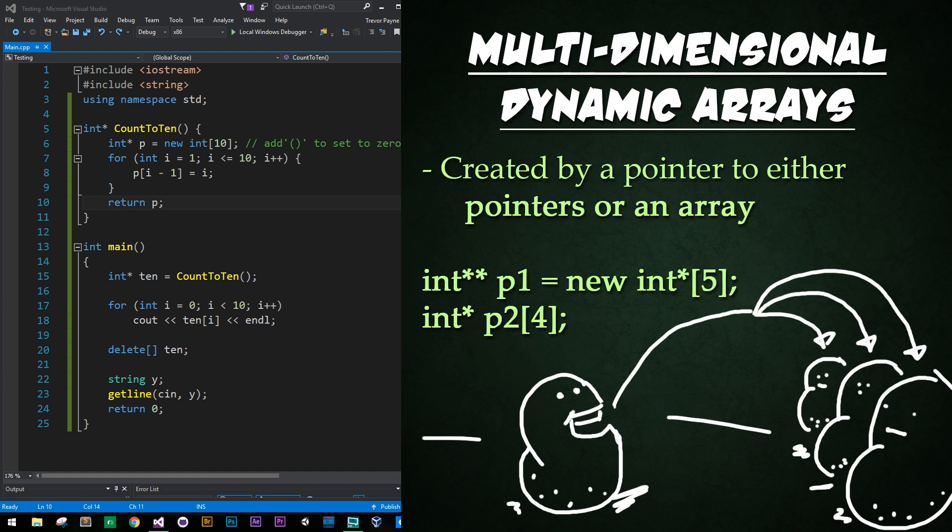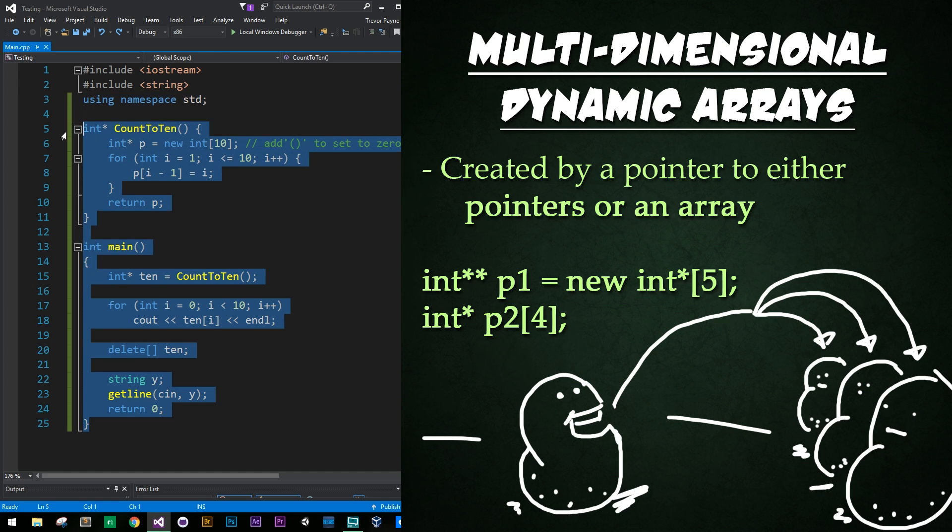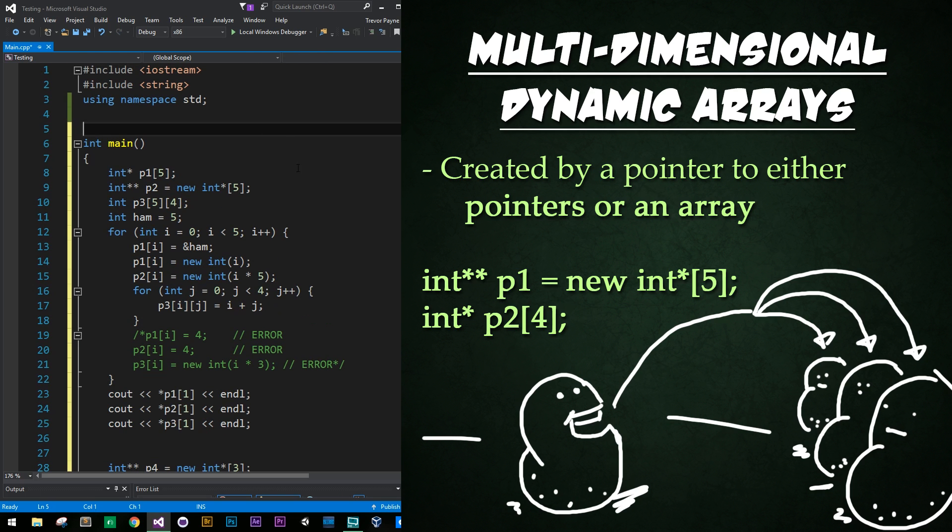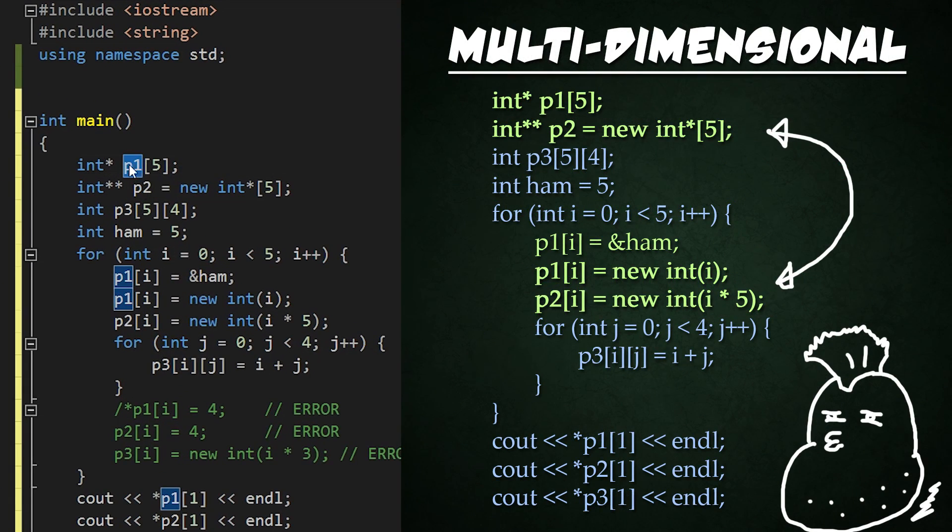Now, you may be asking yourself, how do I create a multidimensional dynamic array? It's actually a little bit tricky. So I'm going to go ahead and replace all this code right here with this, and let's comb through this code. So this first variable, we have a pointer to an array of pointers that are called off the stack. Then P2 is a pointer to other pointers that is going to be dynamically allocated array of pointers with a size of five. After that, we have just an array of arrays. And finally, we have the creation of a variable ham, because I love ham, and it's set to a value of five.